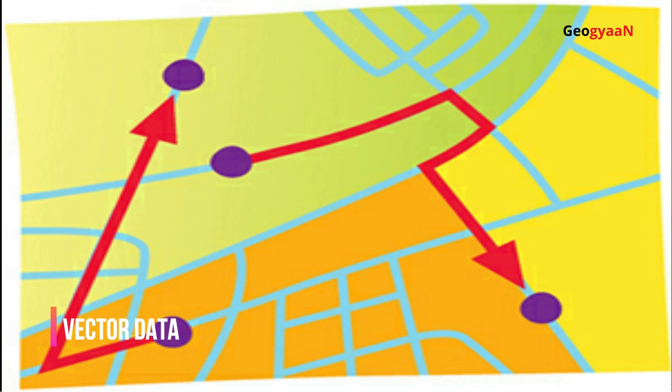First, vector points are simply XY coordinates. Secondly, vector lines connect each point or vertex with paths in a particular order. Finally, polygons join a set of vertices together.